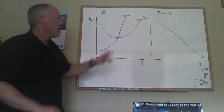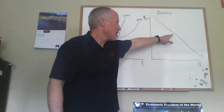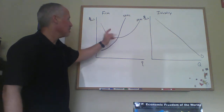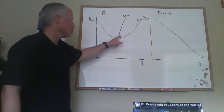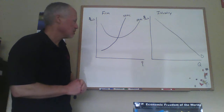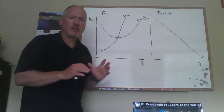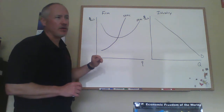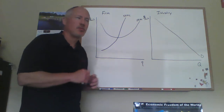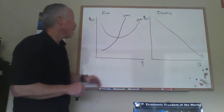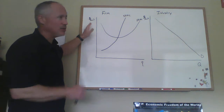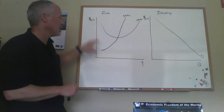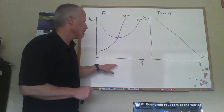I'm going to draw it up here to start. On the industry diagram, we're going to draw the market demand curve. On the firm diagram, we're going to have the firm's cost curves. The two curves we'll need will be the short-run average cost curve and the marginal cost curve. On the vertical axis, we have dollars per unit, so we can have price or cost on the vertical axis. Both quantity axes are in quantities.